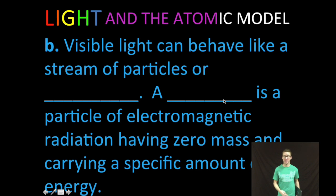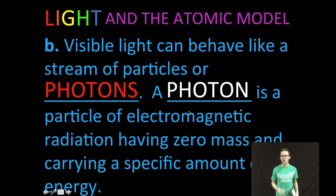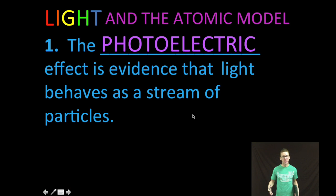Okay, now visible light, turns out, can also behave like a stream of particles or photons. And a photon is just a particle of electromagnetic radiation having zero mass and carrying a specific amount of energy. Now, the photoelectric effect is evidence that light behaves as a stream of particles and not just as a wave. Again, it's not hugely important for this course, but you should know that the photoelectric effect is the reason that we understand light behaving as both a stream of particles and a wave.